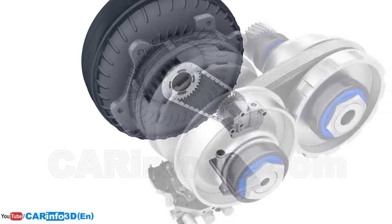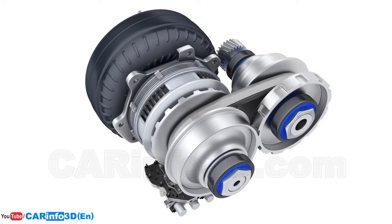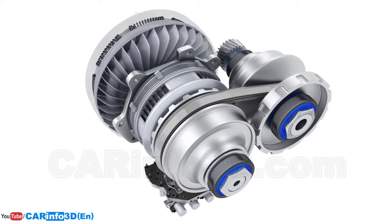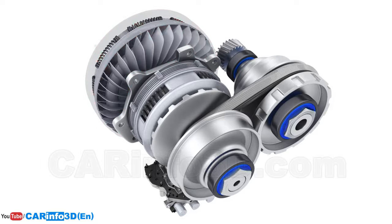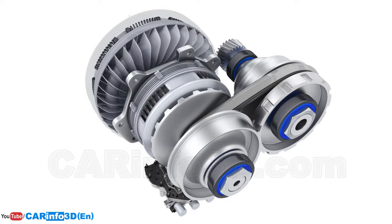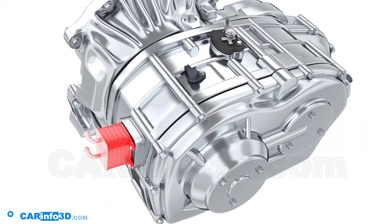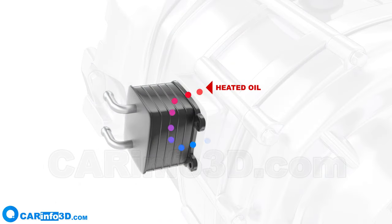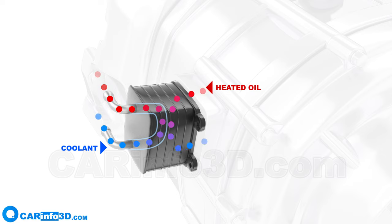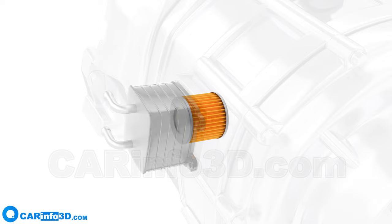It should be noted that the oil in hydraulic automatic transmissions gets extremely hot, owing mostly to the torque converter. The oil therefore requires a cooling system, such as a small heat exchanger that mixes heated oil with a coolant. To clean the oil, another filter might be installed after the heat exchanger.